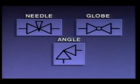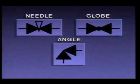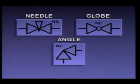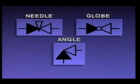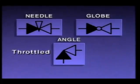If the symbols look like this or have the letters NO beside them, the valves are normally open. If the symbols are filled in or have the letters NC beside them, the valves are normally closed. The symbol may also be shown partially filled in, which indicates the valve is in a throttled position.